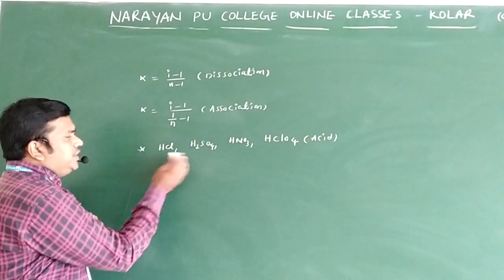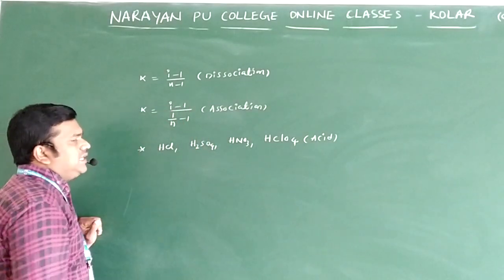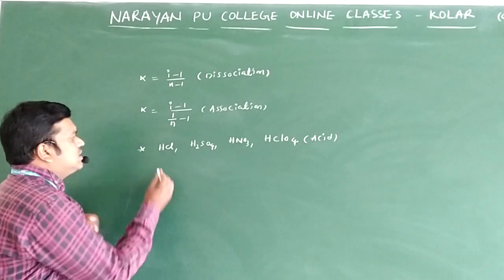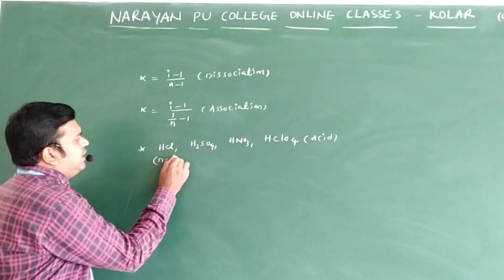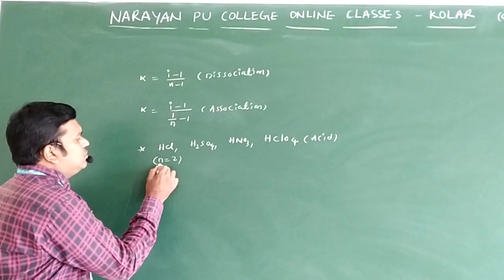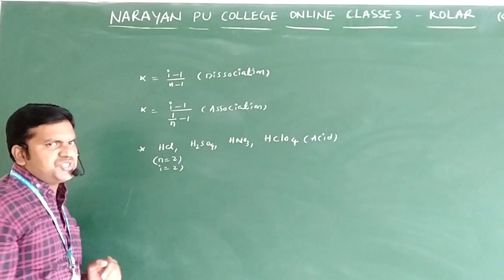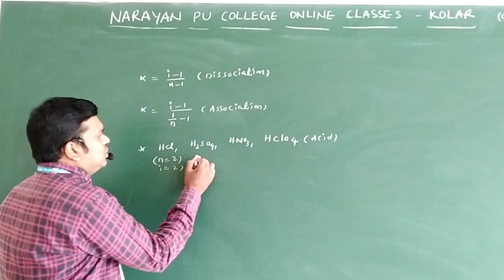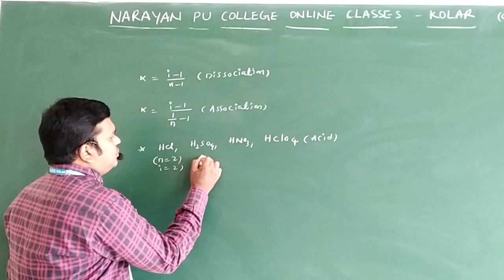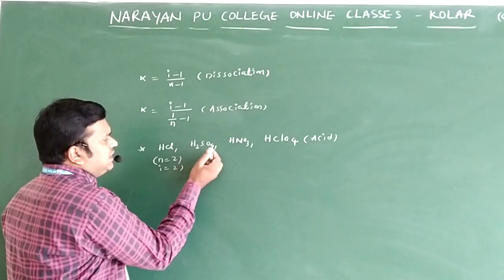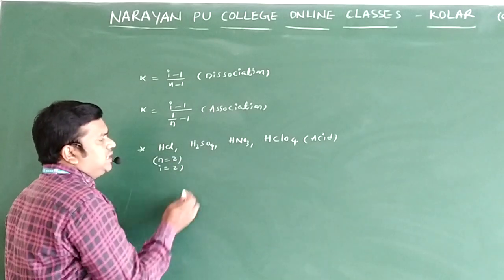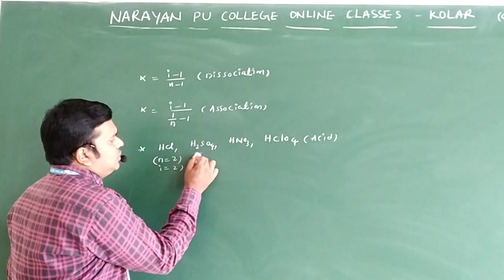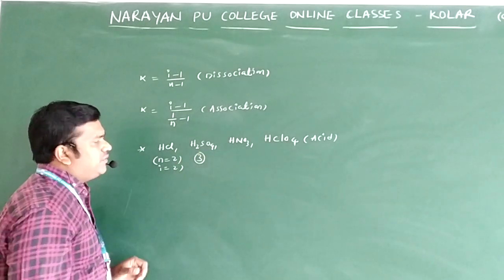For a strong electrolyte like H₂SO₄, we write the dissociation: H₂SO₄ → 2H⁺ + SO₄²⁻. Here we have 2H⁺ and one SO₄²⁻, so the total number of ions is three. Therefore the n value and i value are both equal to three for this strong acid.